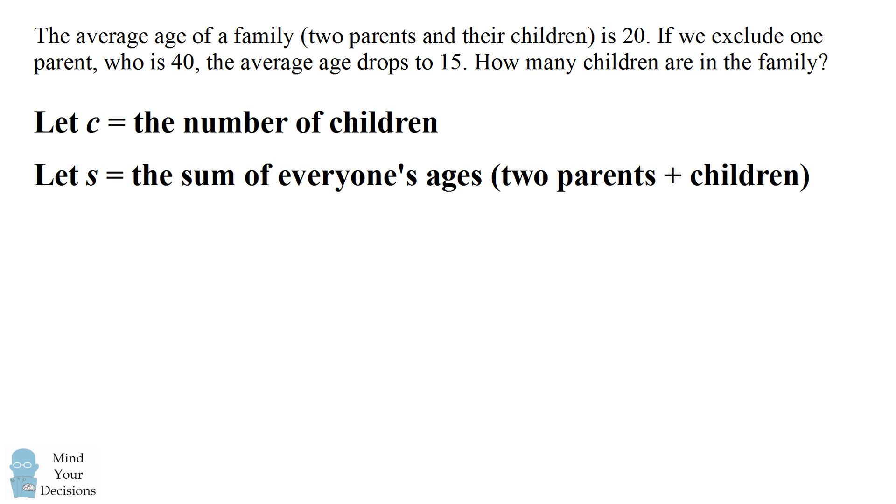Now let's translate the word information into equations. We have the average age of the family equal to 20. Now this numerator will be the sum of everyone's ages s. The denominator will be the two parents plus the children. So this will be c plus 2, and we want s divided by c plus 2 to equal the average 20.